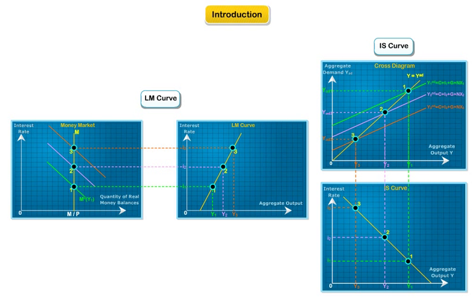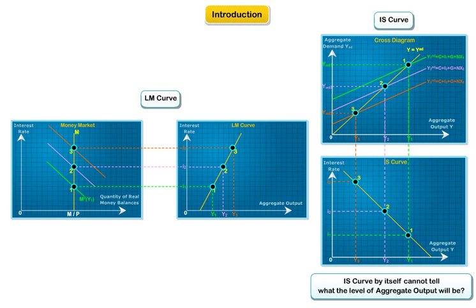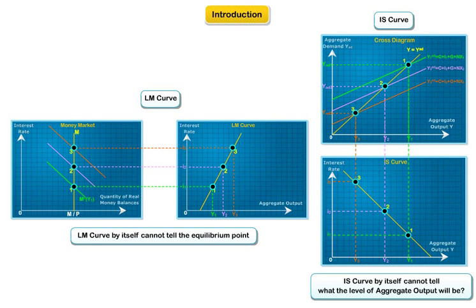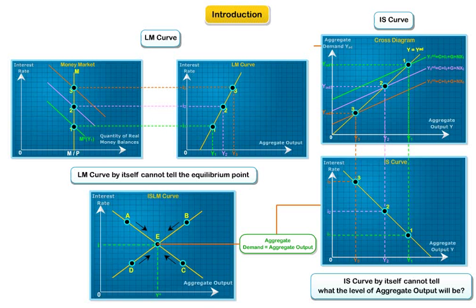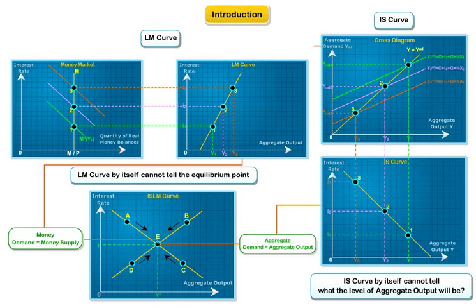Just as a demand curve alone cannot tell us the quantity of goods sold in the market, the IS curve by itself cannot tell us what the level of aggregate output will be, because the interest rate is still unknown. Similarly, just as the supply curve alone cannot tell us the quantity of goods sold, the LM curve by itself cannot tell us the equilibrium point. When the IS and LM curves are combined in the same diagram, their intersection determines the equilibrium level of aggregate output as well as the interest rate — the point where aggregate demand equals aggregate output in the product and services market, and money demand equals money supply in the money markets. We would build this story step by step in this discussion.